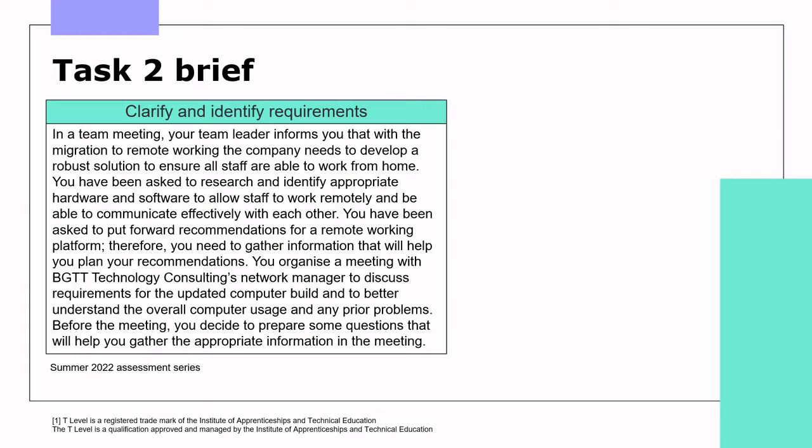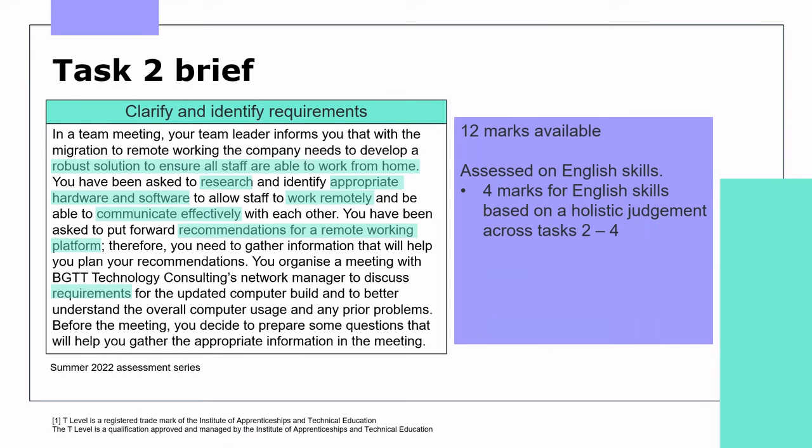In task 2, students will be presented with an issue that they need to design a solution for, with 12 marks in total available. Students are also assessed on their English skills within this task, but the use of English is marked holistically with its own marking scheme. Examiners will award a maximum of 4 marks for English skills, based on the student's performance across tasks 2, 3, and 4. As for the brief itself, students are given limited information about the issues or needs of the business, and this task is about finding out the necessary information via a simulated interview. This task has 3 parts to it.